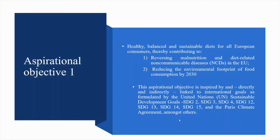The general framework of aspirational objectives and targets sets out a common vision for the EU food chain. Aspirational objective 1: Healthy, balanced and sustainable diets for all European consumers, thereby contributing to reversing malnutrition and diet-related non-communicable diseases in the EU, reducing the environmental footprint of food consumption by 2030. This objective is linked to SDG 2 Zero Hunger, SDG 3 Good Health and Well-being, SDG 4 Quality Education, SDG 12 Sustainable Production and Consumption, SDG 13 Climate Action, SDG 14 Marine Protection, SDG 15 Biodiversity, and the Paris Climate Agreement.